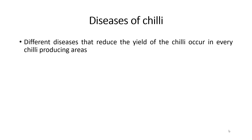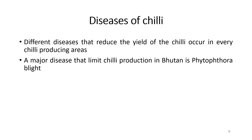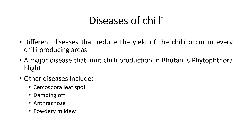Different diseases that reduce the yield of Chile occur in every Chile-producing area. A major disease that limits Chile production in Bhutan is Phytophthora blight. Other diseases include cercospora leaf spot, damping off, anthracnose, and powdery mildew. However, for today's presentation we will be only looking at Phytophthora blight.